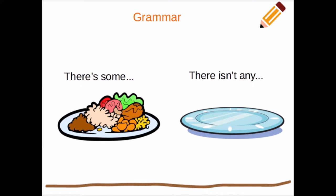So if we look at the picture on the left that says 'there's some,' we could say there's some chicken, there's some salad, there's some rice, because we see all those things. Is there some ice cream in that picture? No — there's zero ice creams that we can count. How about cake? Do you see any cake in that picture? No, there's zero cakes. How about a cup of water? There's zero cups of water that we can see. So when there's zero, that means there isn't any. So there isn't any water, there isn't any cake, there isn't any ice cream.